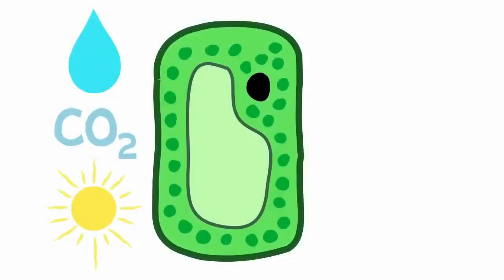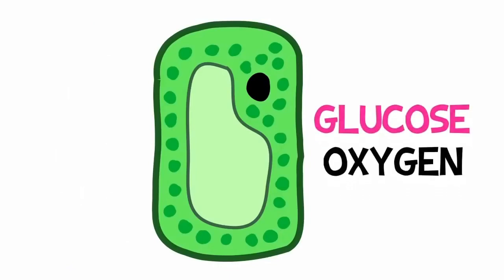So now the leaf's palisade cells have water, carbon dioxide, and sunlight. All they need to photosynthesize and make glucose, their food, and oxygen.